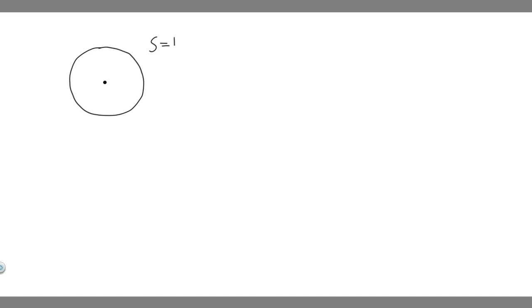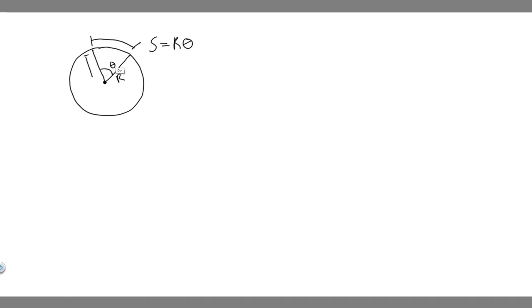In order to solve this problem, there's something you should know. Let's draw a circle here with the center marked. You need to know this formula: S equals R theta. What this formula does is tell us S — if you draw a chunk of the circle with angle theta, S is this distance along the circle, the arc length. And R is just the radius — the same length on both sides.